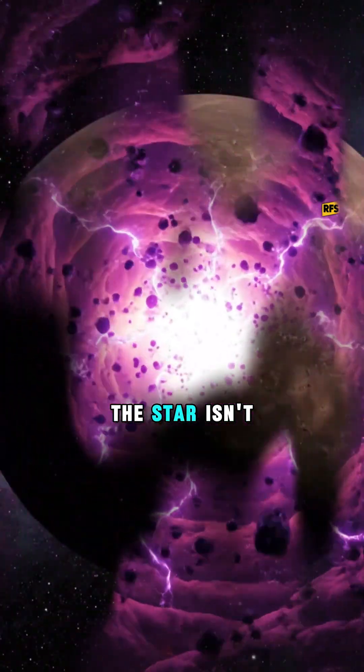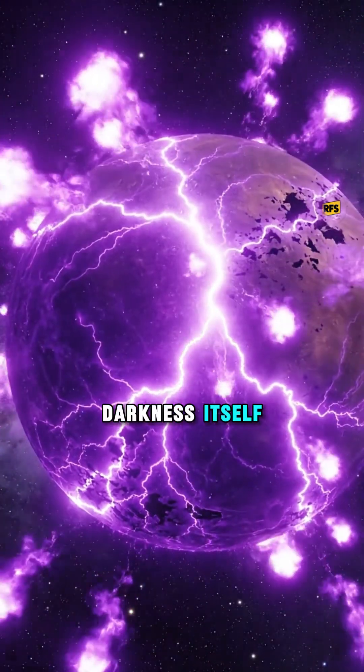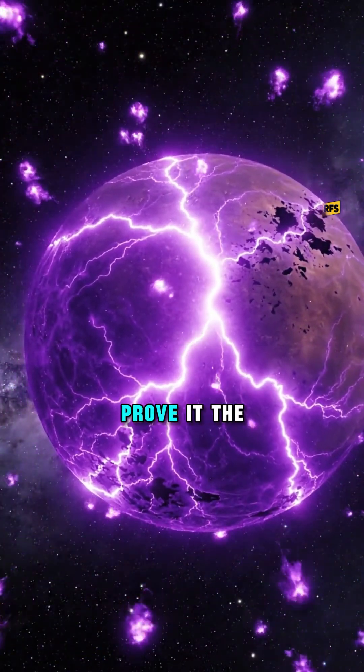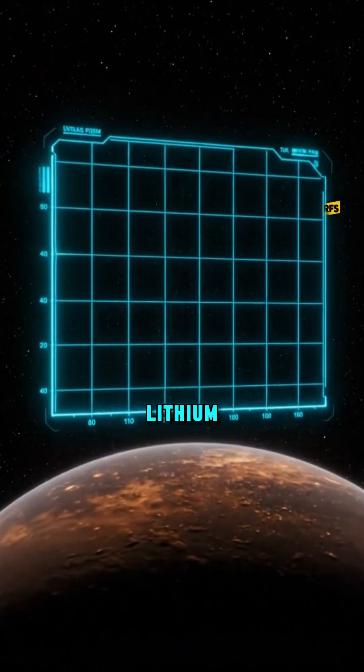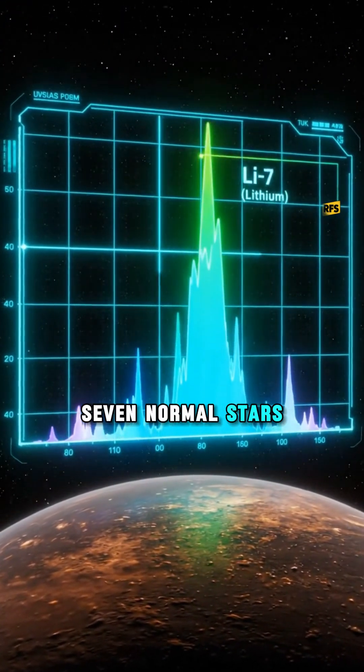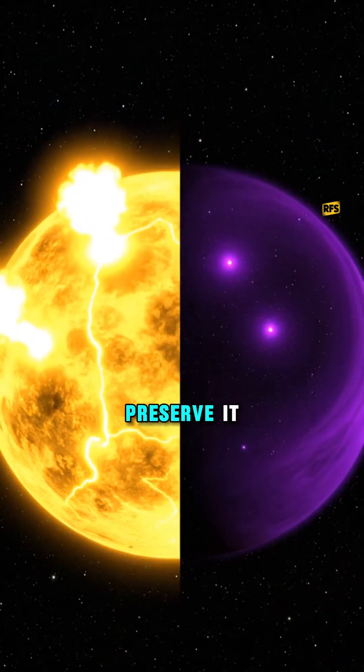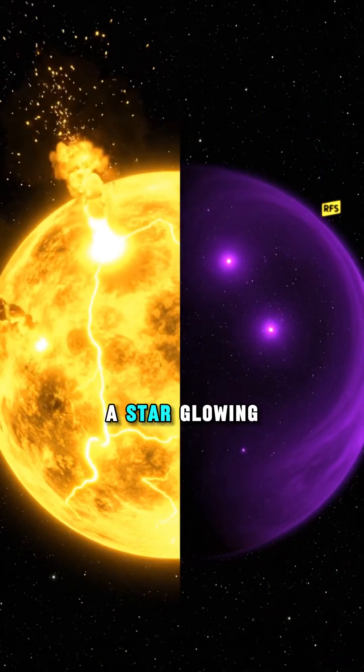The star isn't burning hydrogen—it is burning darkness itself. How do we prove it? The smoking gun is lithium-7. Normal stars destroy this element instantly, but dark dwarfs preserve it. If we find a star glowing with lithium...